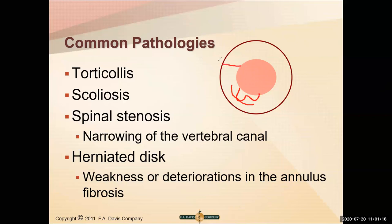The worst situation is when the jelly escapes the donut - the nucleus pulposus breaks through the annulus. That happened in one video reference where there was no nucleus pulposus left; it had escaped and the body reabsorbed it. The disc looked dry and cake-like when removed - like pulling out dry sponge cake.